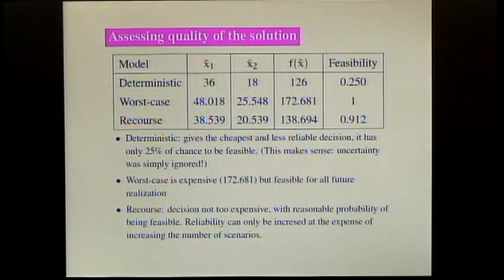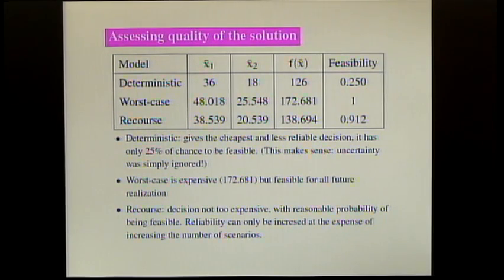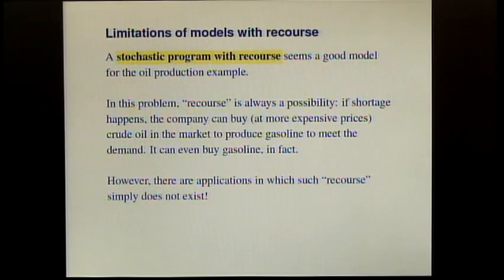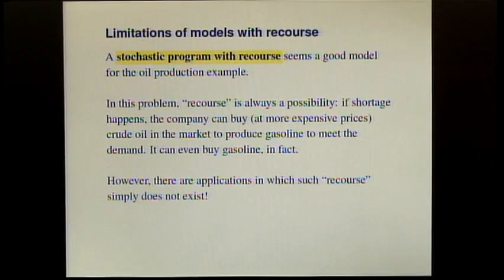Comparing the models: the deterministic solution is feasible only in 25% of cases — we didn't take uncertainty into account at all. The worst case is always feasible because we took into account too much uncertainty. The recourse model is in between — it gave us the possibility of correcting mistakes and we are still rather reliable at 91%. If we want more reliability, we use more scenarios, but the problem becomes more difficult to solve. You must find a scenario representation sufficiently good for reliability but still computationally tractable.